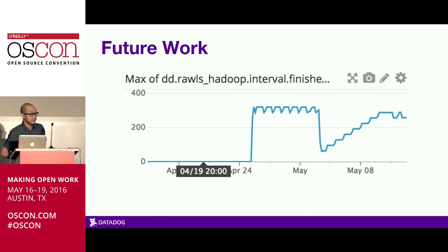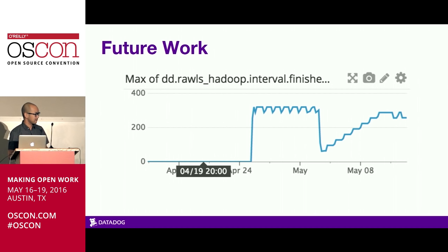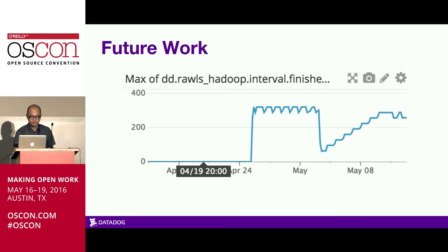Some things we're looking at for future work include holiday detection — things that only happen once a year aren't picked up well because we don't look more than a year back in history, and you'd also have to deal with internationalization. Another thing we want to address is metrics with very little history, since anomaly detection is based on history and doesn't work well without it. We also want to allow users to specify that a particular period of time represents normal behavior, instead of having the machine learning algorithm try to pick it up by itself.